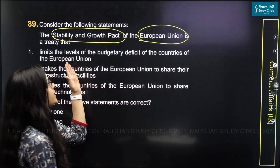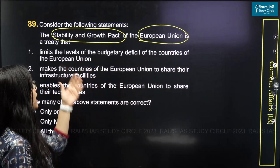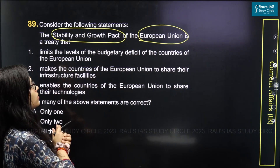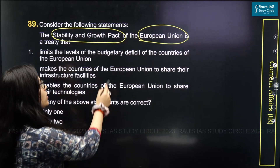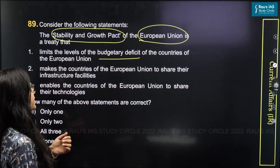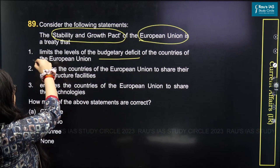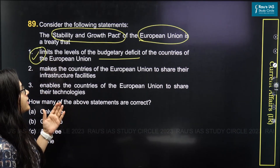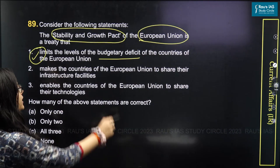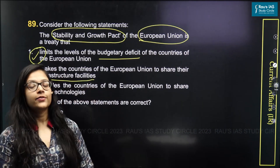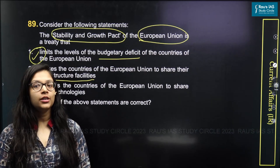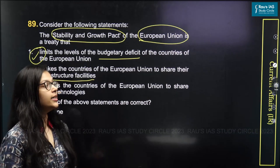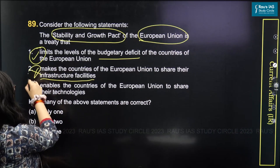The question states that the Stability and Growth Pact of the EU has the following aspects. The first statement mentions that it limits the level of budgetary deficit of the countries — this is the correct statement, as we have seen in the previous explanation. The second statement says it makes the countries of the EU share their infrastructural facilities. However, there is no mention about the infrastructural aspects; it only mentions fiscal policy. So this statement becomes incorrect.